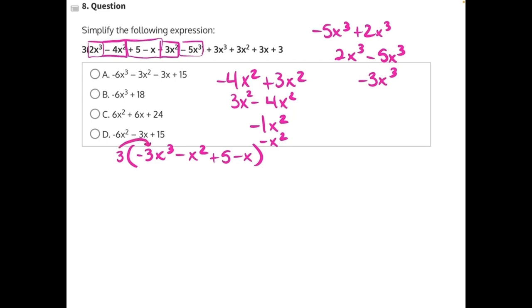So we will have 3 times negative 3, which will give us negative 9x cubed. Then we'll have 3 times negative x squared, negative 3x squared. 3 times a positive 5, which will give us a positive 15, and then 3 times negative x, which will give us a negative 3x.